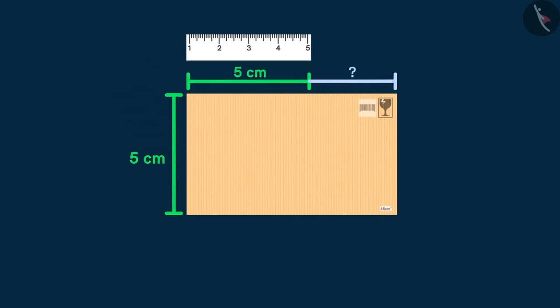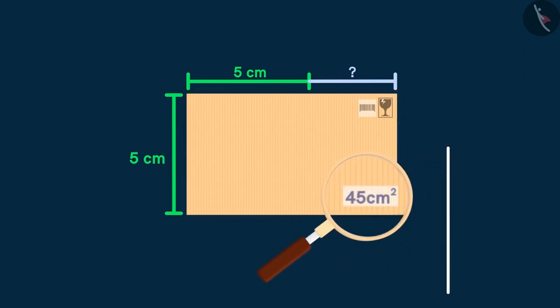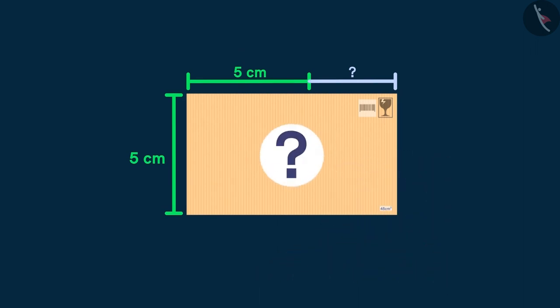His ruler falls short while measuring the length of the parcel. He also notices that in small letters, the area of the rectangular shaped parcel has been measured to be 45 square centimeters. Can you help Raghu find the length of the parcel?